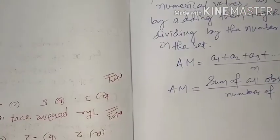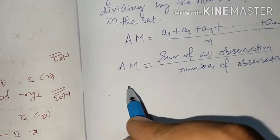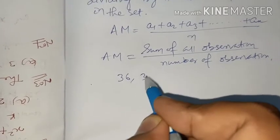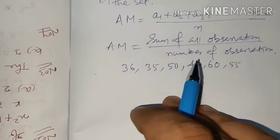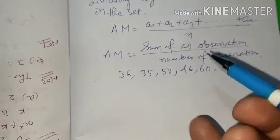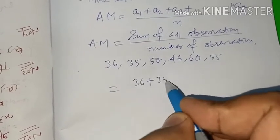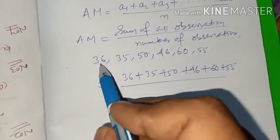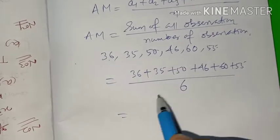Let us discuss an example. A batsman scored in the last six matches: 36, 35, 50, 46, 60, and 55. The question is: find the average run of the batsman. Applying the formula — sum of all observations: 36 + 35 + 50 + 46 + 60 + 55, divided by the number of observations, which is 6.